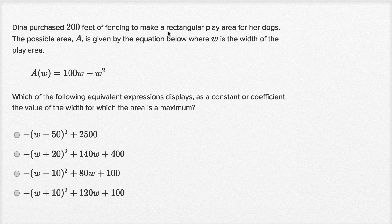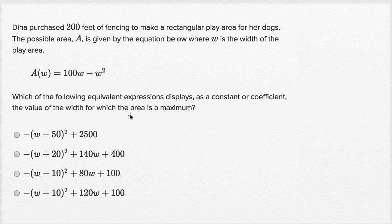Dinah purchased 200 feet of fencing to make a rectangular play area for her dogs. The possible area, A, is given by the equation below where W is the width of the play area. Which of the following equivalent expressions displays as a constant or coefficient the value of the width for which the area is a maximum?